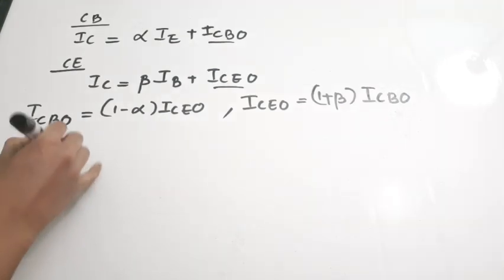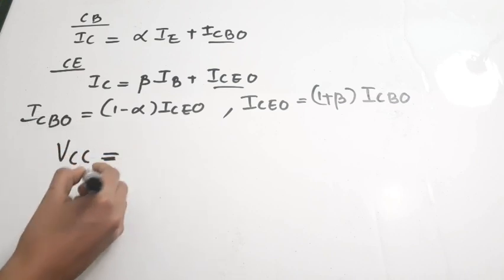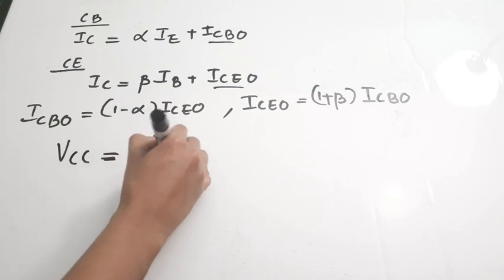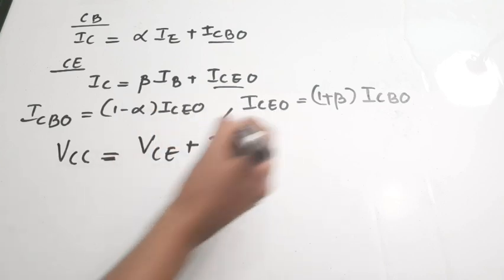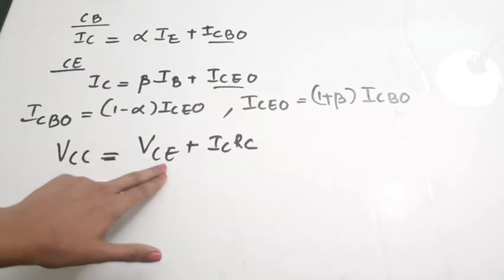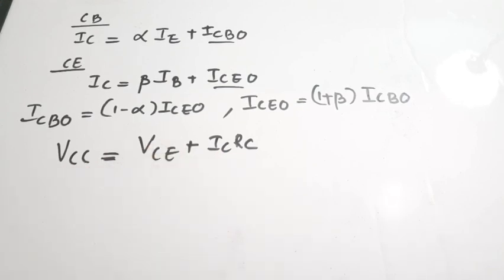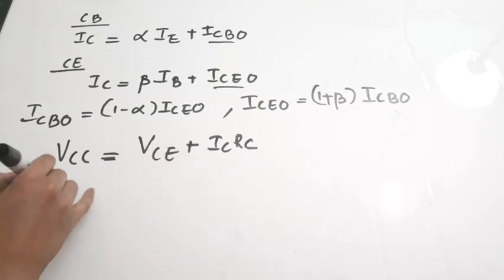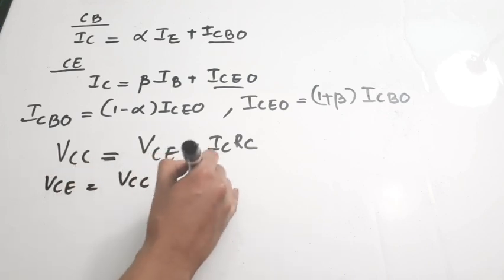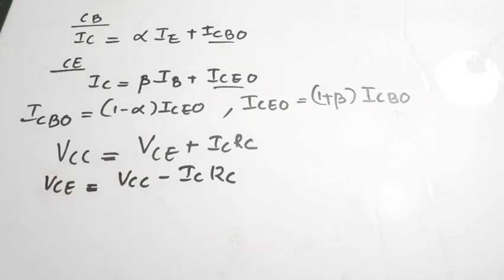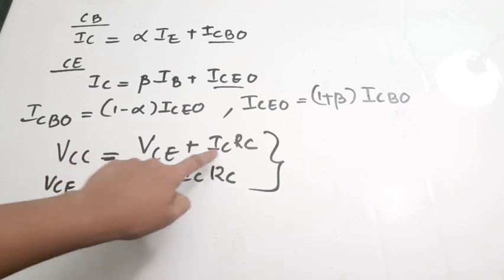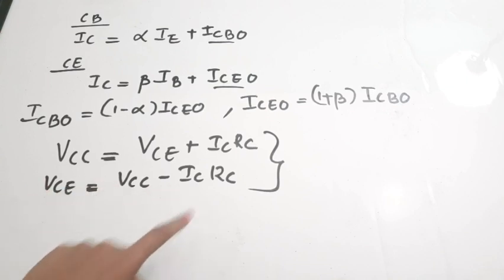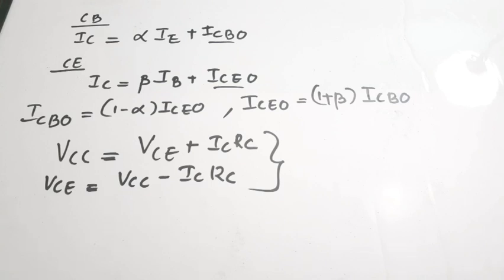Next is the equation for VCC. VCC is equal to VCE plus IC times RC. From this, VCE equals VCC minus IC times RC. When solving transistor-related problems, we make use of these two equations very often.